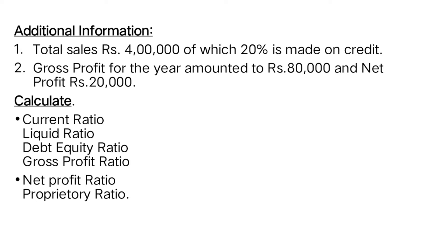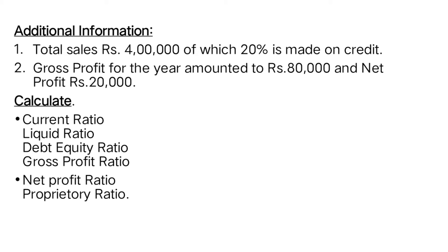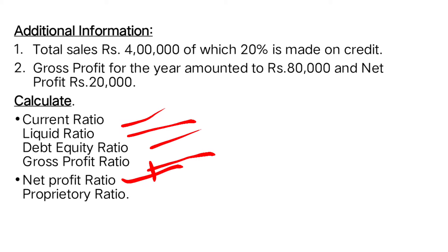Gross profit for the year amounted to rupees eighty thousand and net profit is twenty thousand. We need to calculate: current ratio, liquid ratio, debt-equity ratio, gross profit ratio, net profit ratio, and proprietary ratio. The last two — gross profit ratio and proprietary ratio — are new formulas.